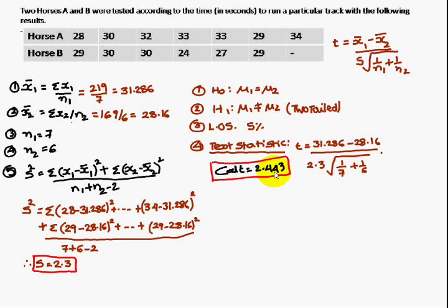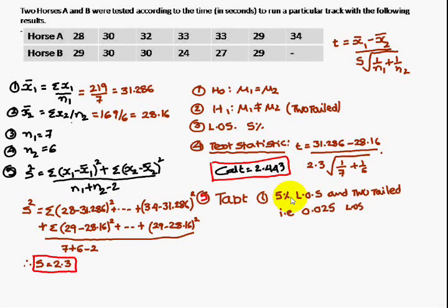Therefore, calculated T, you are going to get it as 2.43. So, calculated T, you have to compare with the 5% level of significance and 2 tail test.